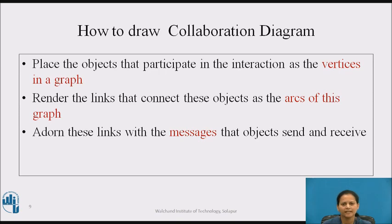We draw a collaboration diagram by first placing the objects that participate in the interaction as vertices in a graph. Next, we render the links that connect these objects as the arcs of this graph. Finally, we add on these links the messages that objects send and receive. This gives a clear visual cue to the flow of control in the context of the structural organization of objects that collaborate.